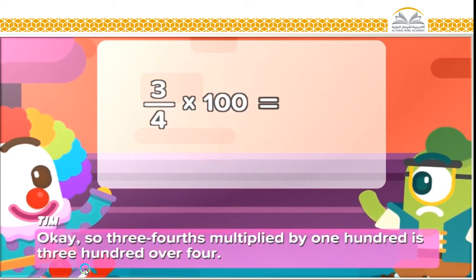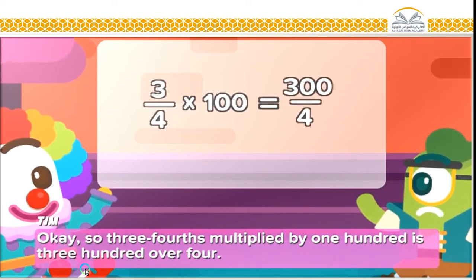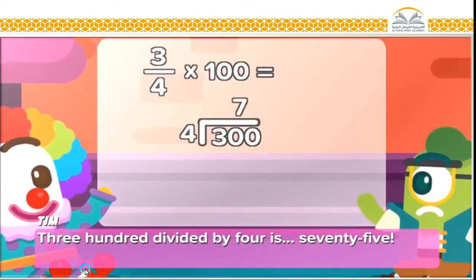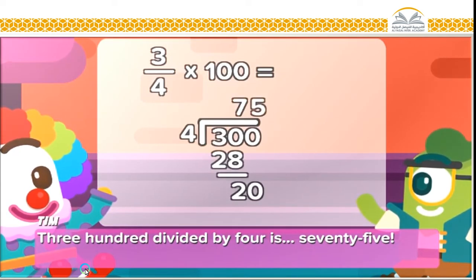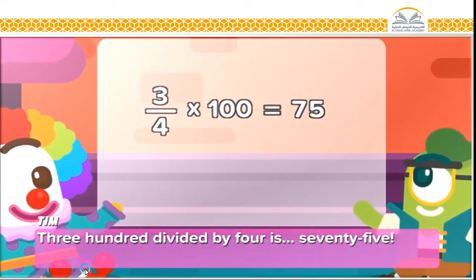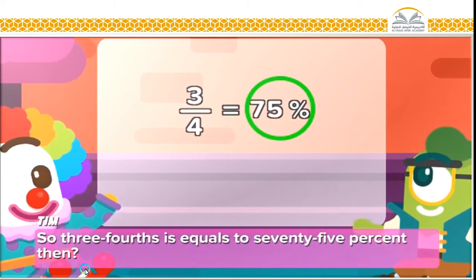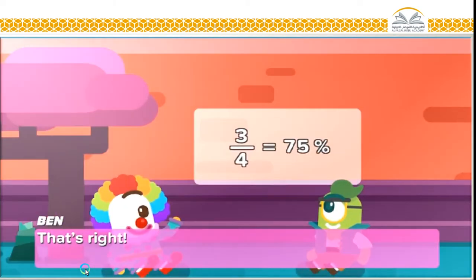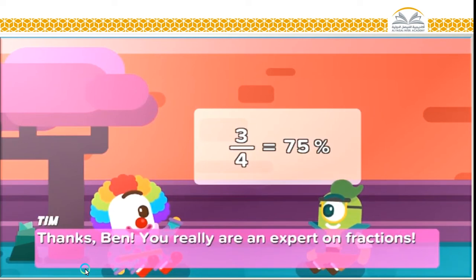Yes. Okay, so three-fourths multiplied by 100 is 300 over 4. 300 divided by 4 is 75. So three-fourths is equal to 75% then? That's right!